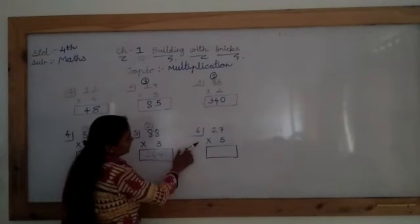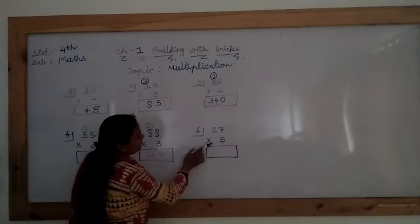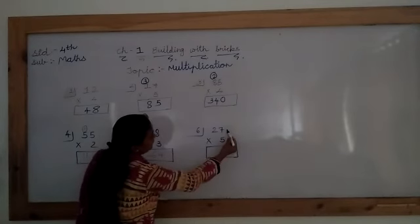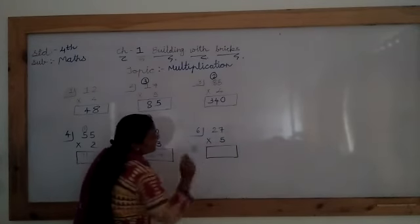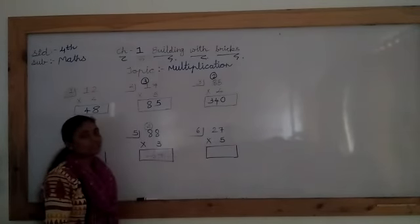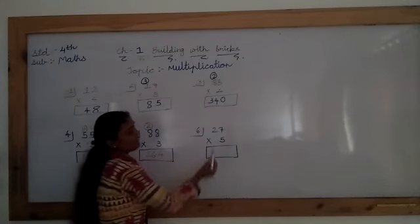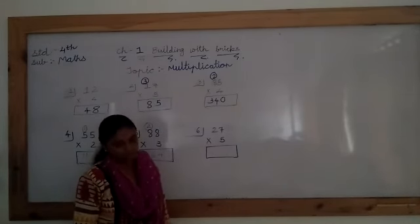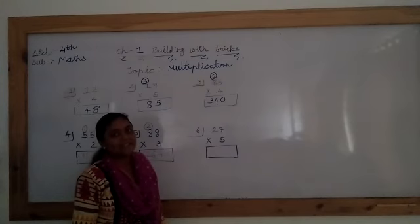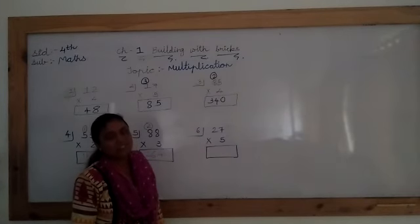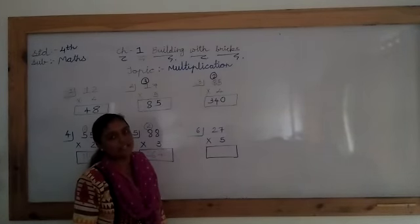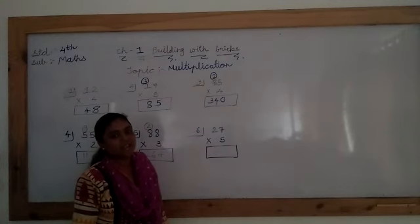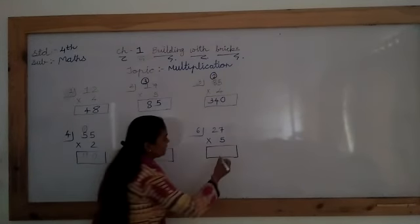Now last but not the least, number 6. 27 into 5. Here again we start from right side. 7 fives up. So which table we have to speak? Yes, 7. 7 ones up? 7. 7 twos up? Very good, 14. 7 threes up? Yes, correct, 21. 7 fours up? Correct, 28. 7 fives up? Yes, very nice, 35.